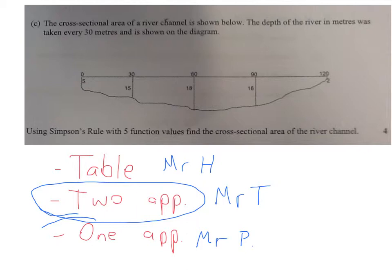Let's have a look. The cross-sectional area of a river channel is shown below. The depth of the river in metres was taken every 30 metres and it's shown in the diagram. Straight away we know whichever method we're going to use, our height is going to be 30 because that is the difference there. The good thing is we don't have to find our function values. These are our function values. So we have those five function values there: 5, 15, 18, 16 and 2, and our height is 30.